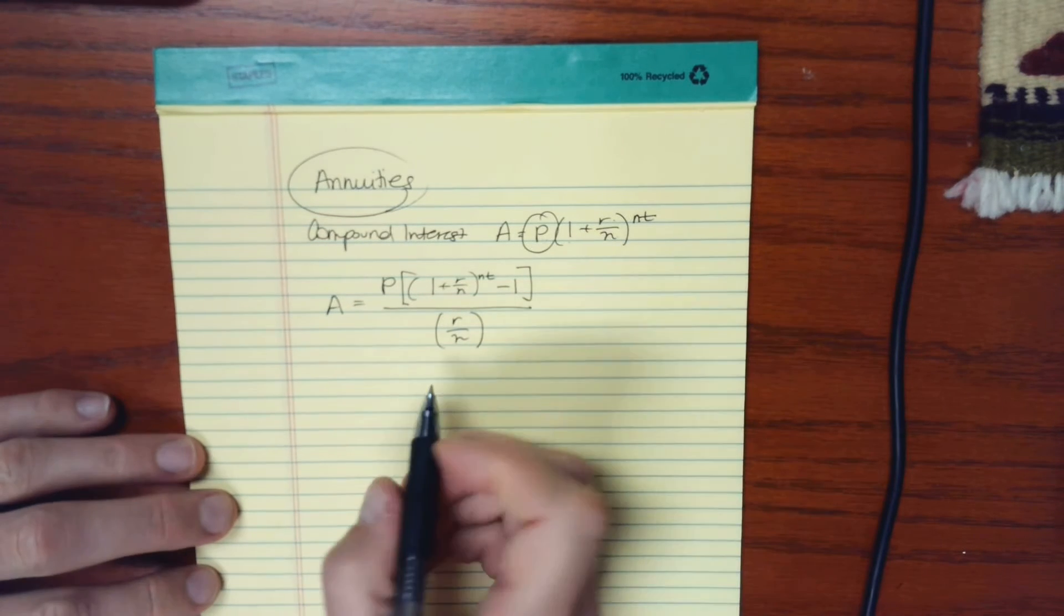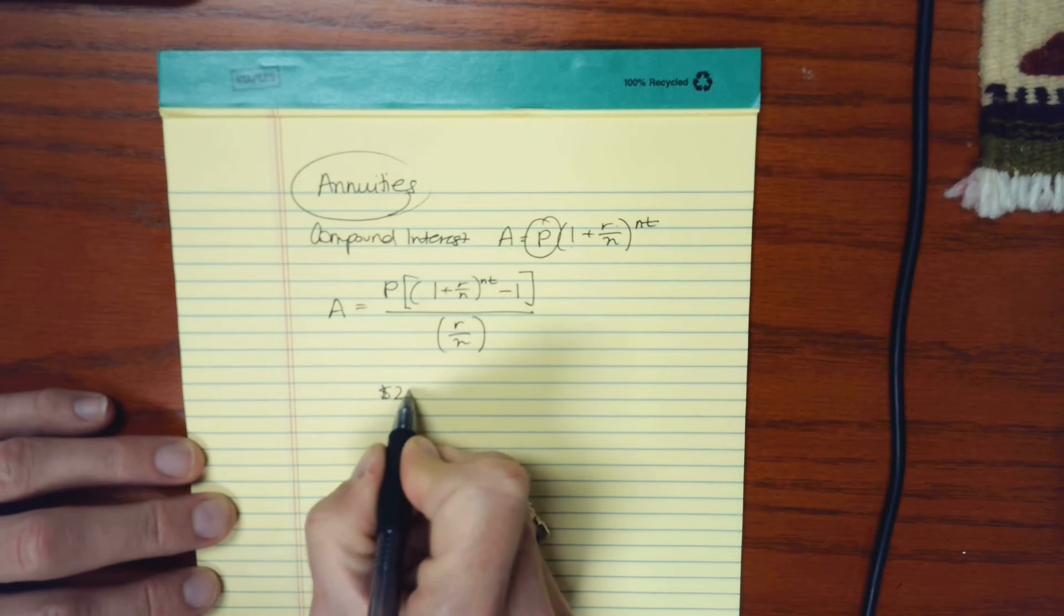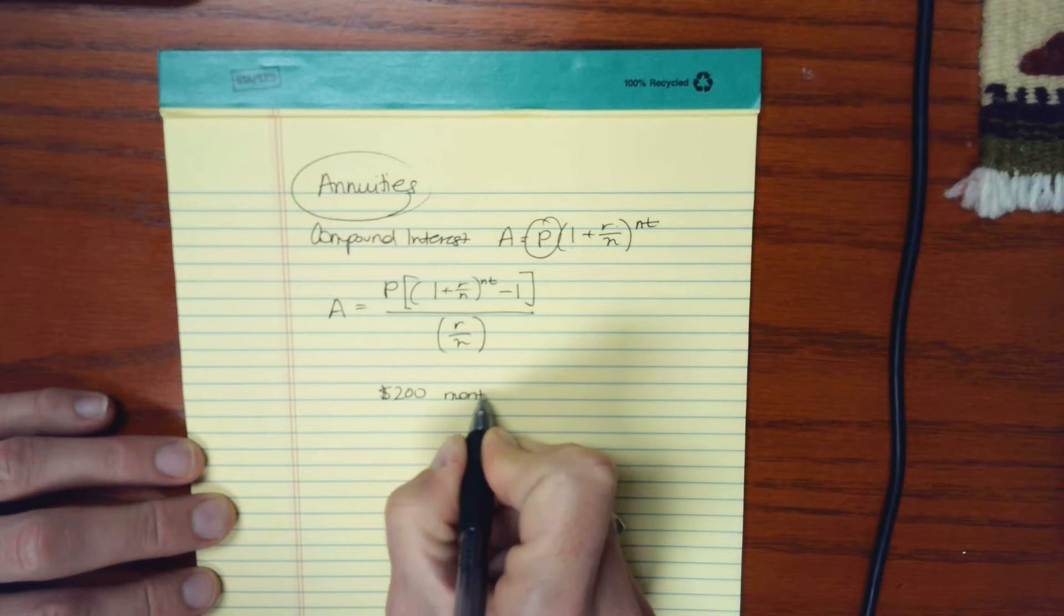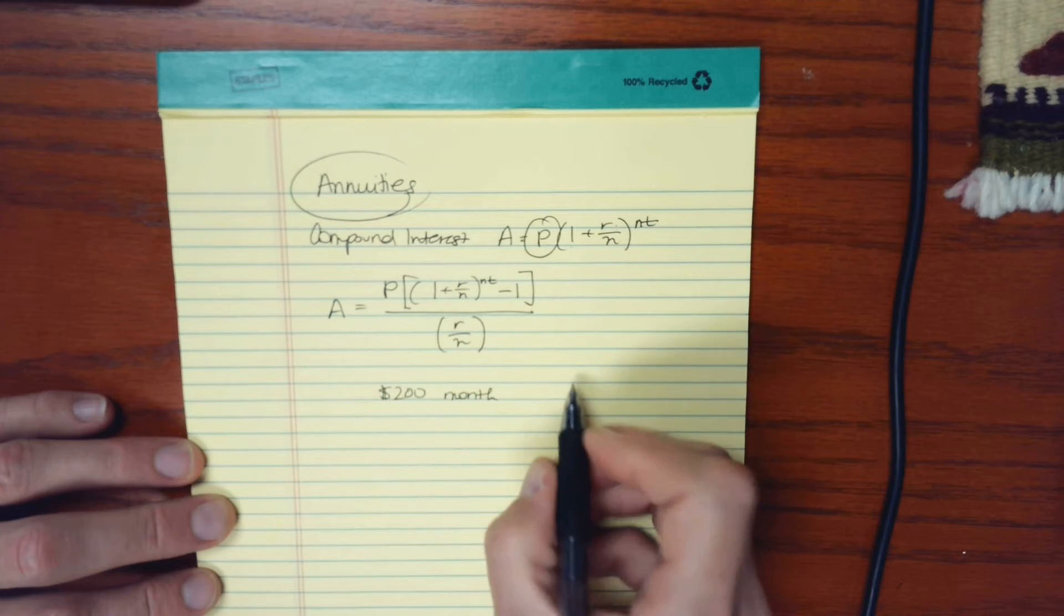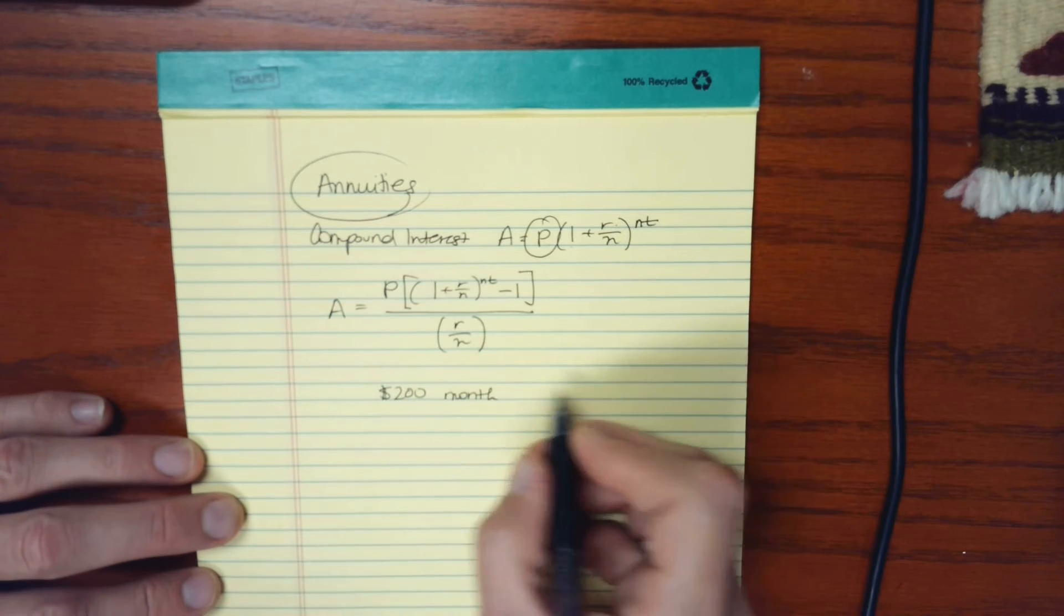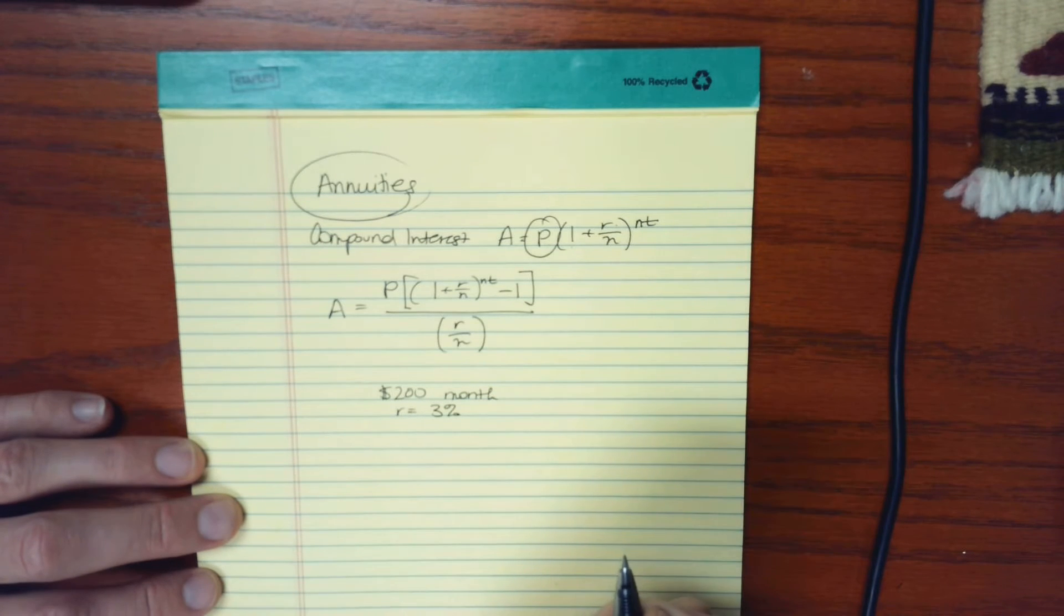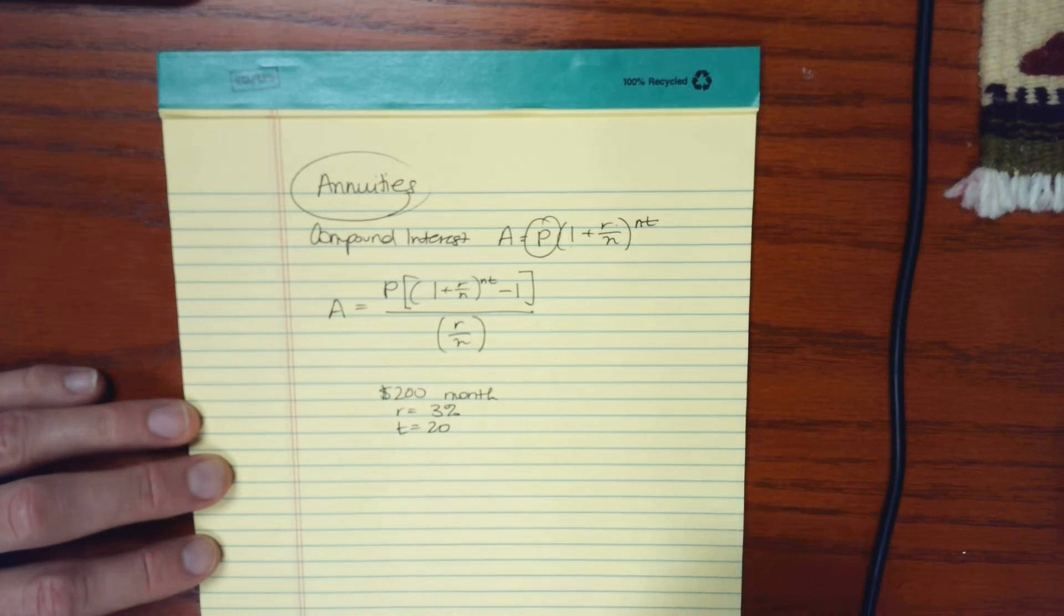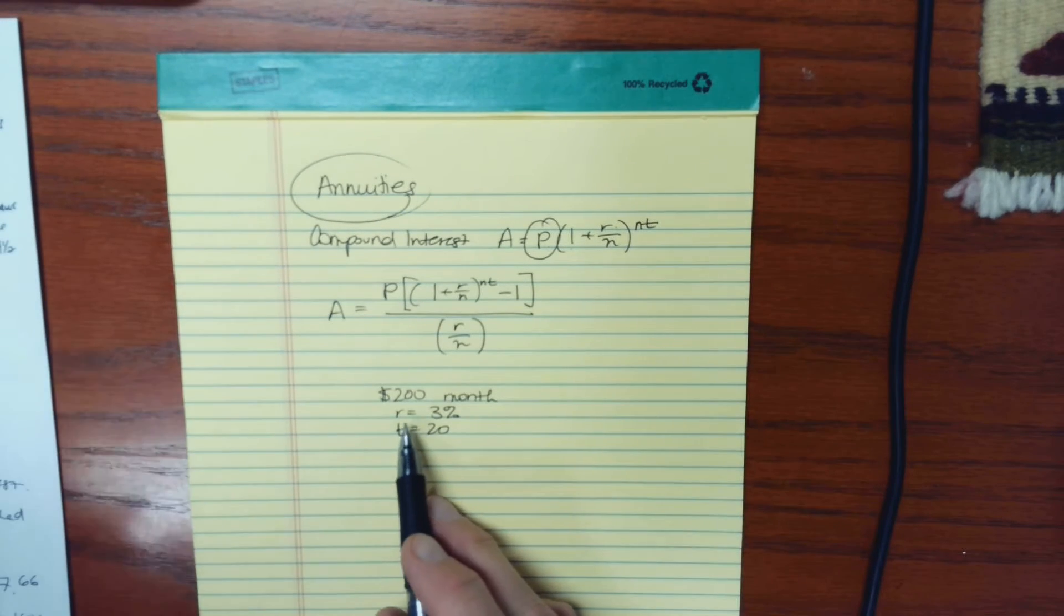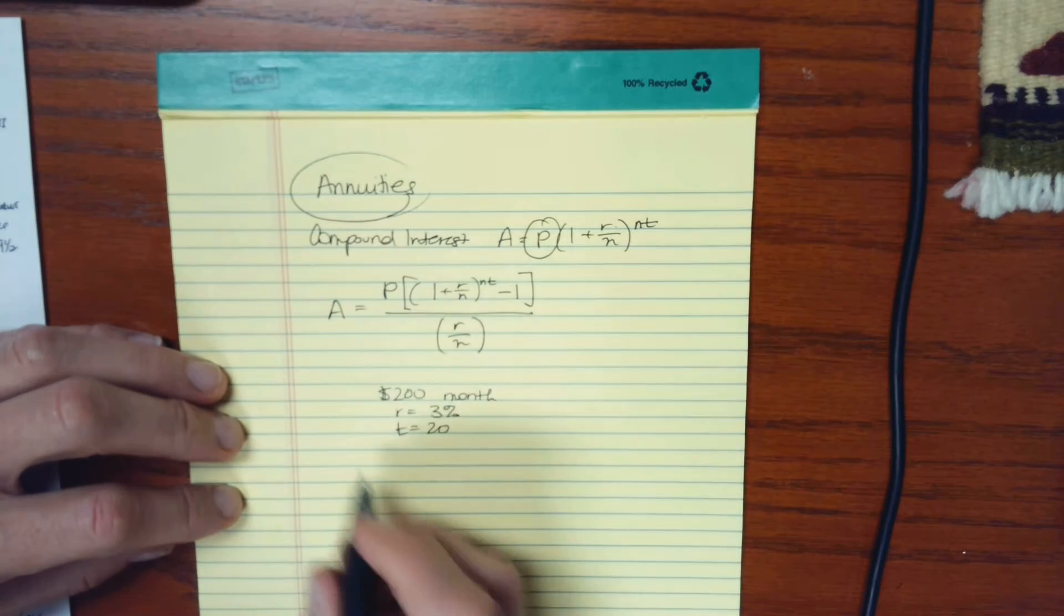So let's say that you are able to set aside maybe $200 each month. And you're going to add this to a savings account, which compounds monthly. And you have an interest rate of, let's say, 3%. And let's see, maybe you have 20 years to follow this strategy.